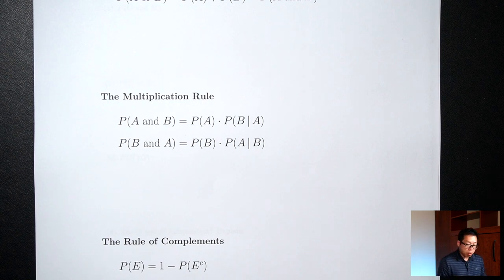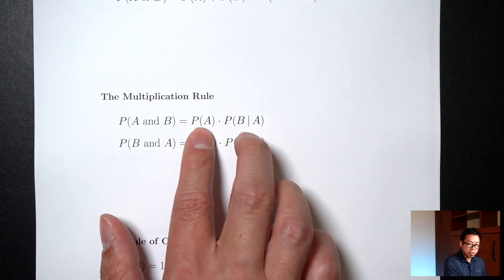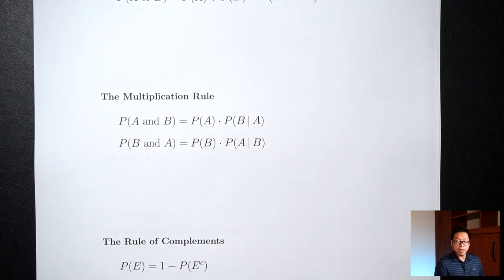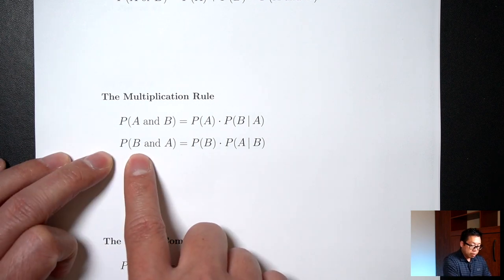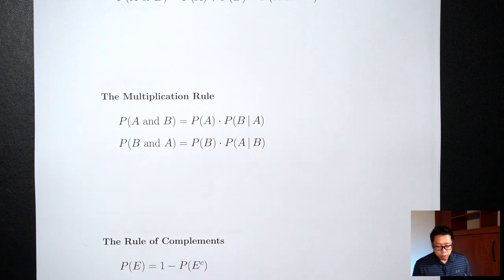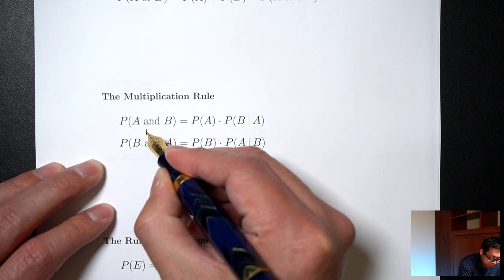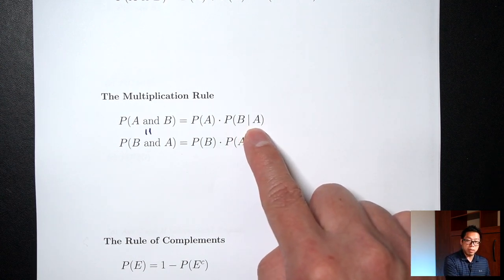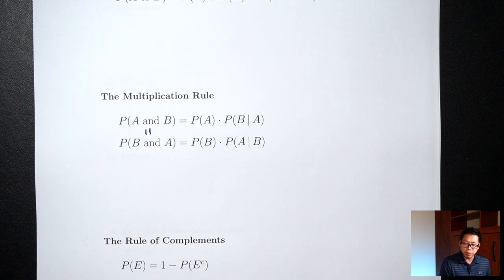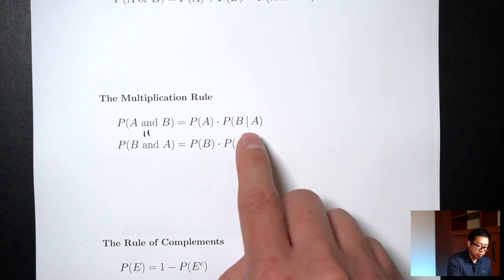The next one is called the multiplication rule, which we also talked about in the last lecture. We used it to find the probability of picking two people — picking one person and then picking a second person — ending up with two fractions multiplied together. The first multiplication rule formula is the same as before. The second one is just swapping A and B. We need both because for AND the order doesn't matter — A and B is the same as B and A — but for conditional probability, the order does matter. P of B given A is different than P of A given B, so depending on the problem, sometimes you need the first version, sometimes the second.